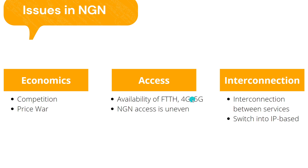For accessibility, the availability of fiber to the home, 4G, and 5G is slow, due to the requirement of high bandwidth capacity. This technology is only widely available in densely populated areas, and NGN access services are potentially divided due to these problems. For interconnection, the challenge of converting the switched network into an IP-based network needs to be overcome, which will be explained later.